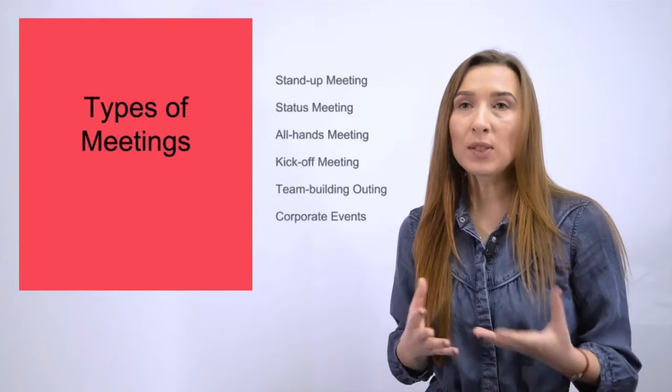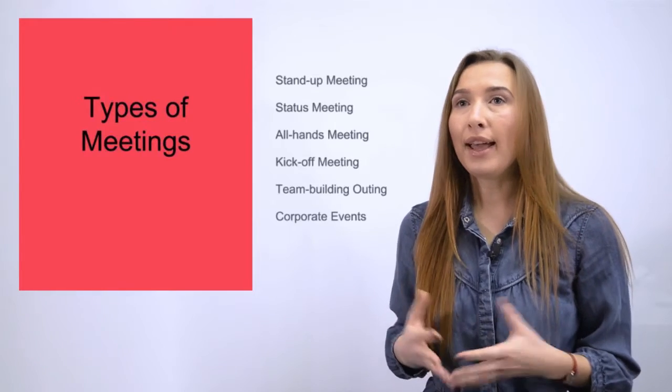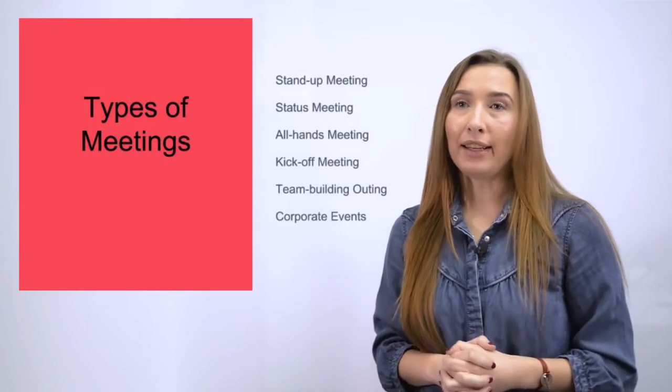There is another meeting that is more like a company meeting. It can be called a status meeting or all-hands meeting. This meeting can be held bi-monthly or monthly. It's a big meeting where all the company employees get together and the CEO or managers share the most important things happening in the company.